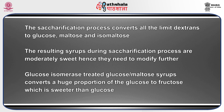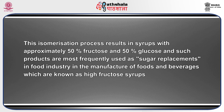Glucose isomerase-treated glucose or maltose syrups convert a large proportion of glucose to fructose, which is sweeter than glucose. This isomerization process results in syrups with approximately 50 percent fructose and 50 percent glucose. Such products are most frequently used as sugar replacements in food and beverage manufacture and are known as high fructose syrups.